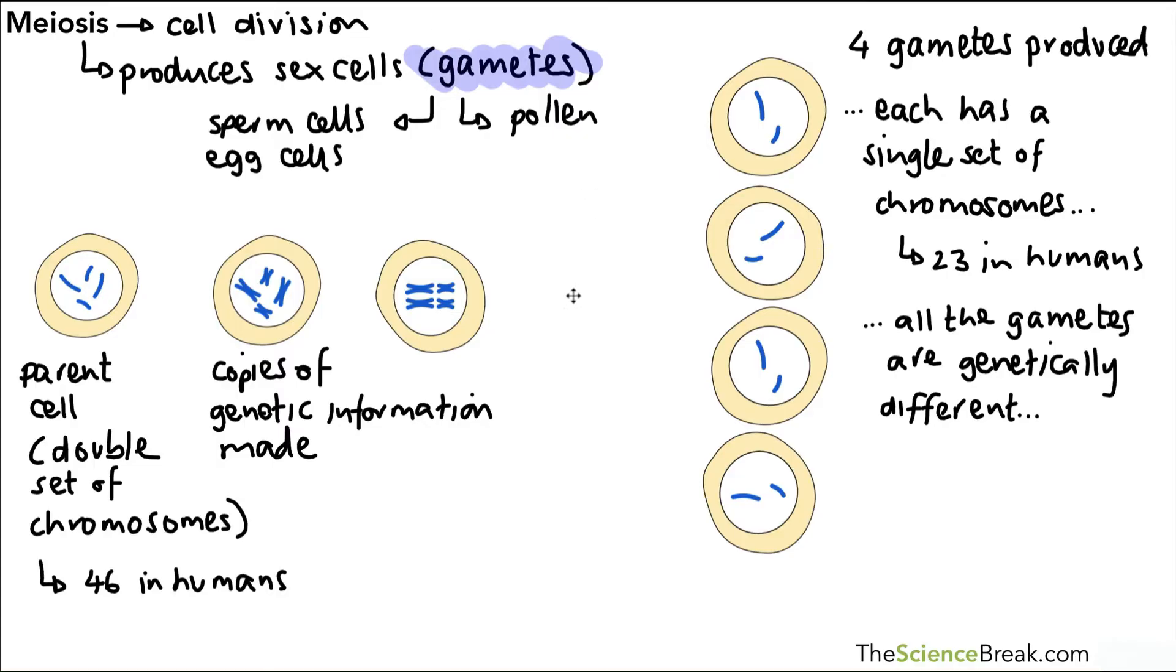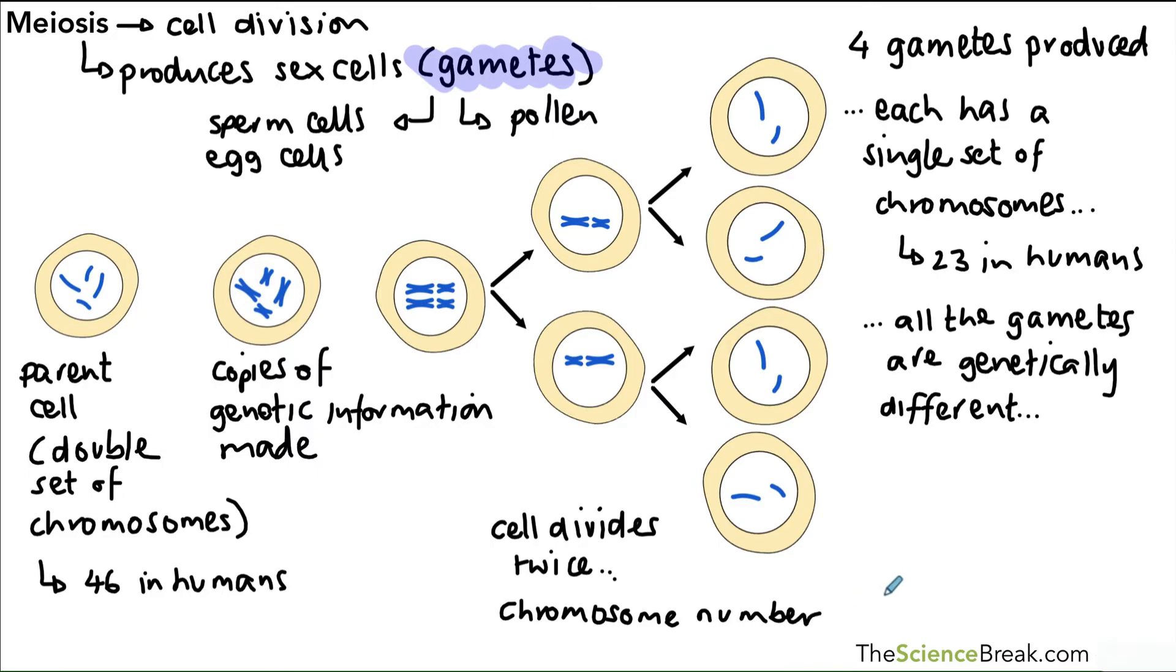We also have another key feature of meiosis - the fact that there are two cell divisions. The cell divides twice to produce our four gametes. In mitosis there was only one division which produced two cells. This one divides twice to give our four gametes.